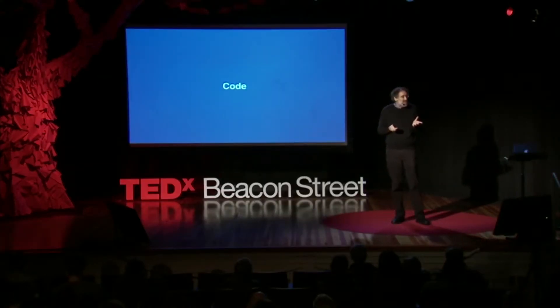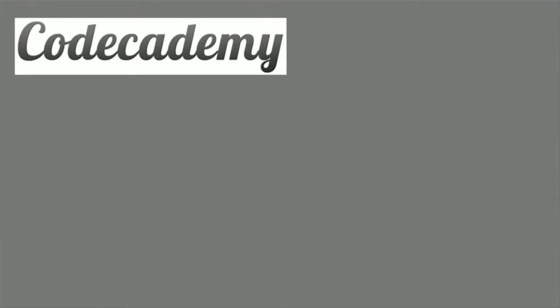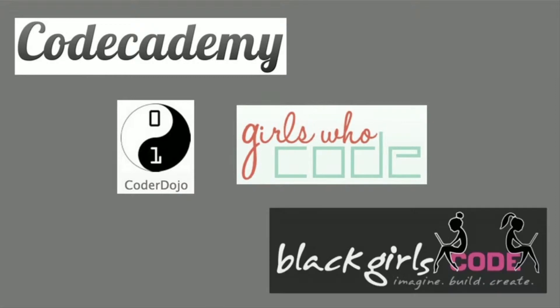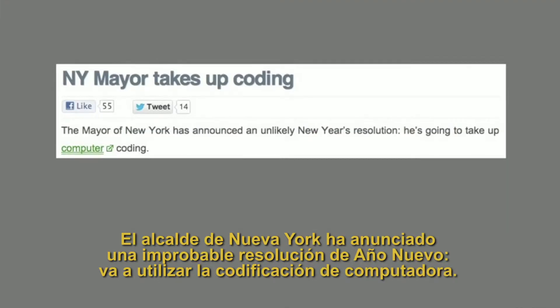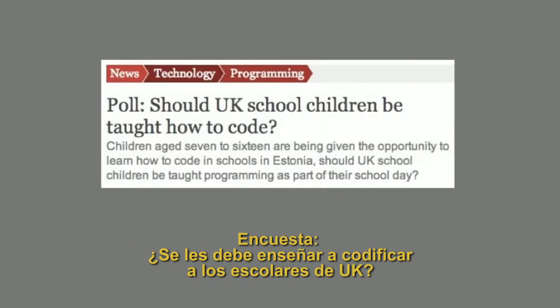En los últimos años, ha habido cientos de nuevas organizaciones y páginas web que ayudan a los jóvenes a aprender a codificar. Verán lugares como Code Academy y eventos como Coder Dojo y sitios como Girls Who Code o Black Girls Code. Parece que todos se han puesto manos a la obra. A comienzos de año, el alcalde de Nueva York, Michael Bloomberg, dijo que iba a aprender a codificar en 2012. Poco meses después, Estonia decidió que todos los niños de primer grado deberán aprender a codificar, lo que provocó un debate en el Reino Unido sobre si todos los niños británicos deberían hacerlo.